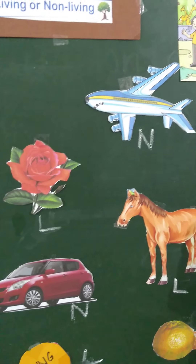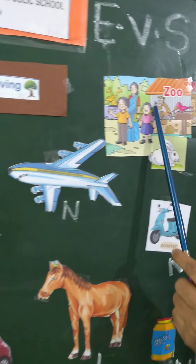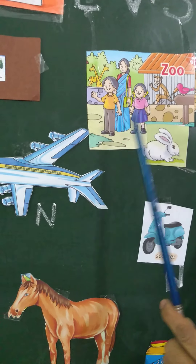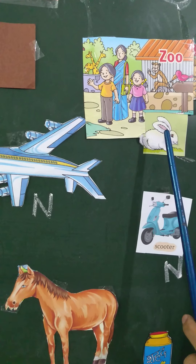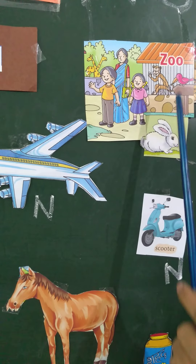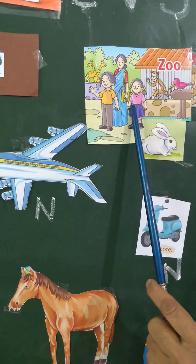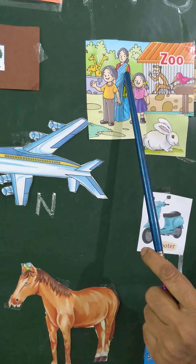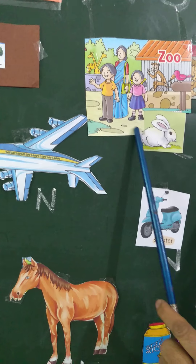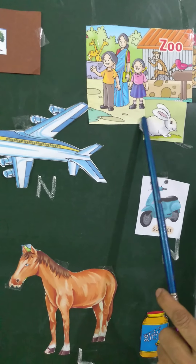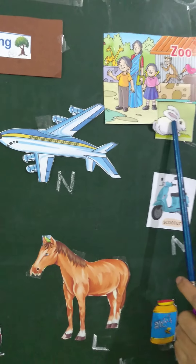And when we go to the zoo, children, there are many animals. They are all living things — rabbit, monkey, sparrow, deer, and children and their mother. They are all living things because they are able to move, they can breathe, and they need food to grow.